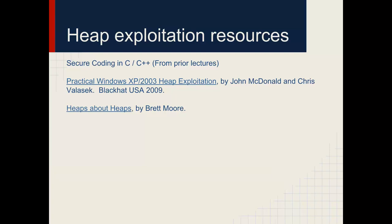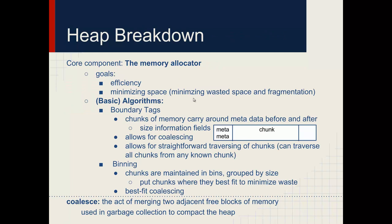The most useful resources are Secure Coding in C and C++. The textbook has some decent coverage of the subject, but there are also some good talks — heaps about heaps and practical heap exploitation as well. A lot of this section is going to be recapped from Lecture 3. For each chunk, you have metadata on the beginning, metadata on the bottom, and chunks are grouped into bins. Usually there's some form of best fit algorithm to minimize waste, and it's also going to be a doubly linked list.